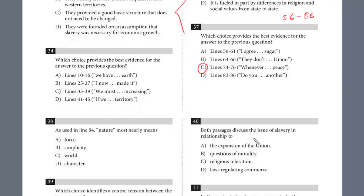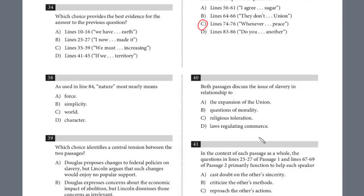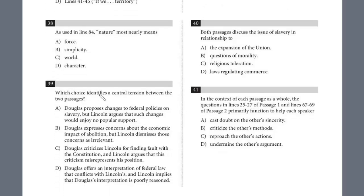At the very end, we have a few compare and contrast questions — it's a lot easier after you've done them independently. Question 39: which choice identifies the central tension between the two passages? Choice A: Douglas proposes changes to federal policies, but Lincoln argues that changes would not enjoy popular support. Definitely not on point. Choice B: Douglas expresses concerns about the economic impact of abolition, but Lincoln dismisses those as irrelevant. Not accurate either. Choice C: Douglas criticizes Lincoln for finding fault with the Constitution — he's almost misrepresenting him — and Lincoln argues that his criticism misrepresents. This is definitely the right choice.